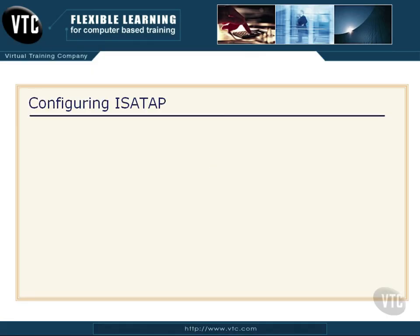Welcome to Configuring ISATAP. This is going to be part one of a two-part video. In part one I want to talk to you about ISATAP: what it is, what it does, when we would use it, because it is an IPv6 transition technology. Microsoft mentions configuring ISATAP explicitly in their objectives for this certification exam. In part one let's chalk talk about what it is and why you would use it, which will probably get you through most questions on the exam. Then in part two I'll walk step by step through how we set up an ISATAP server so you can understand that and get through the exam.